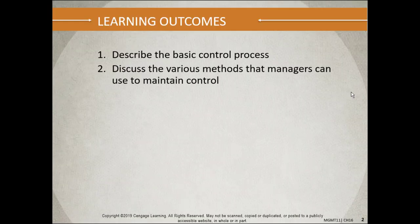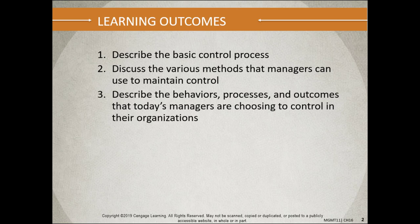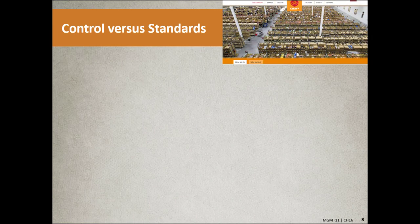Let's look at the content of this chapter for learning outcomes. We'll look at the basic control process, discuss the various methods that a manager can use to maintain control, and describe the behavior, processes, and outcomes that today's managers are choosing to control in their organization. I always encourage you to make sure you read any type of vignette or opening pieces.